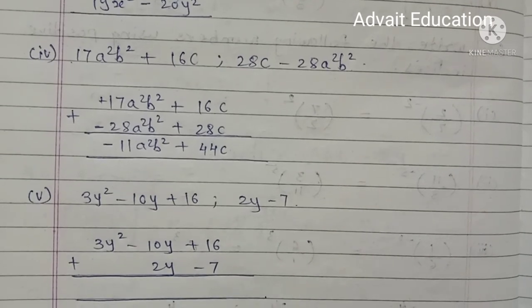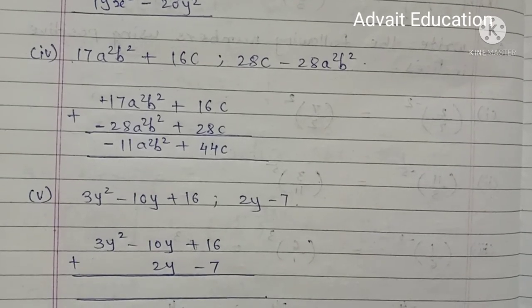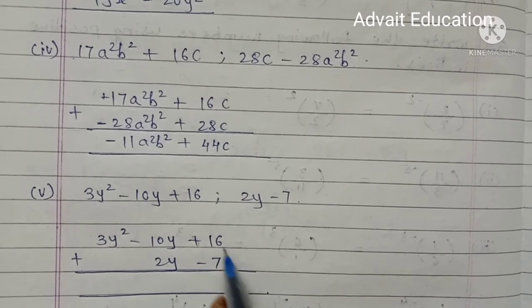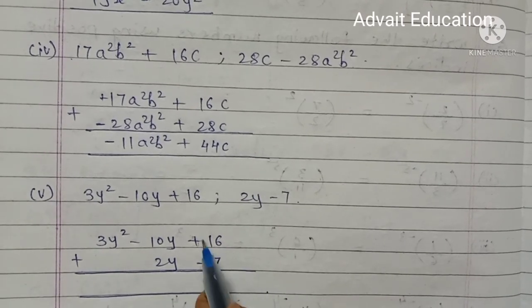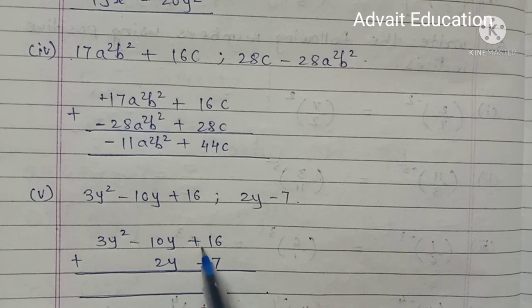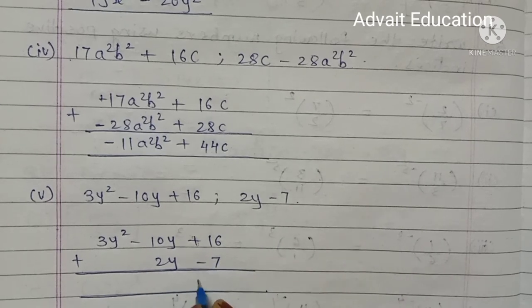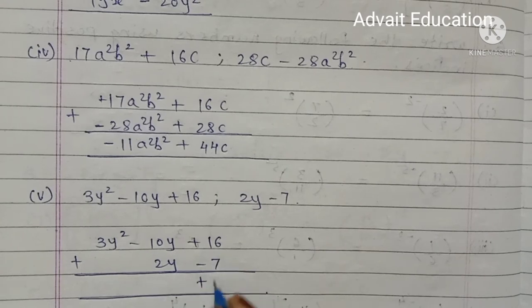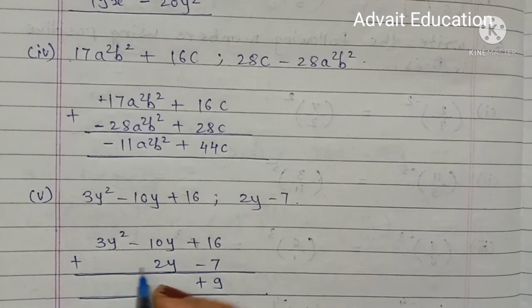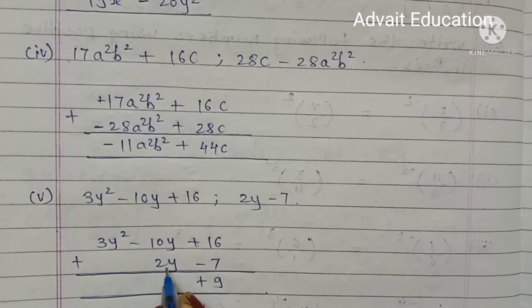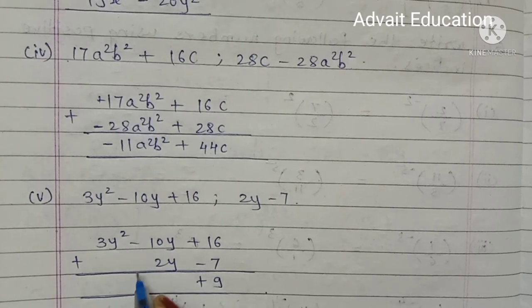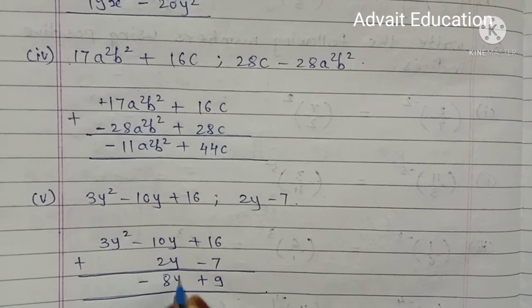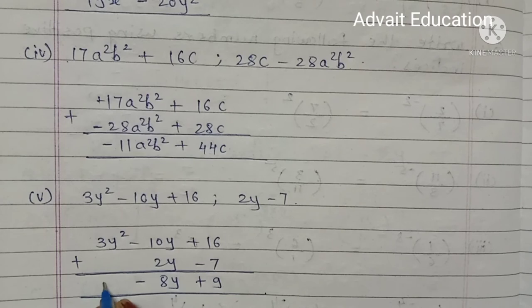Fifth problem: 3y² minus 10y plus 16, and 2y minus 7. Plus minus minus, sign of bigger number: 16 minus 7 equals 9 with positive sign. 10y minus 2y equals 8y with minus sign. 3y² as it is. Answer: 3y² minus 8y plus 9.